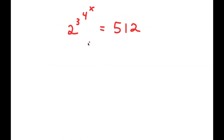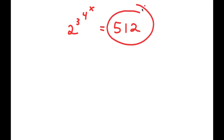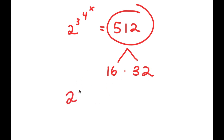In this problem, I have 2 to the power of 3 to the power of 4 to the power of x is equal to 512. To solve this, I'm going to start by rewriting 512. So 512 is the same thing as 16 times 32. I can now write 2 to the power of 3 to the power of 4 to the power of x equals 16 times 32.